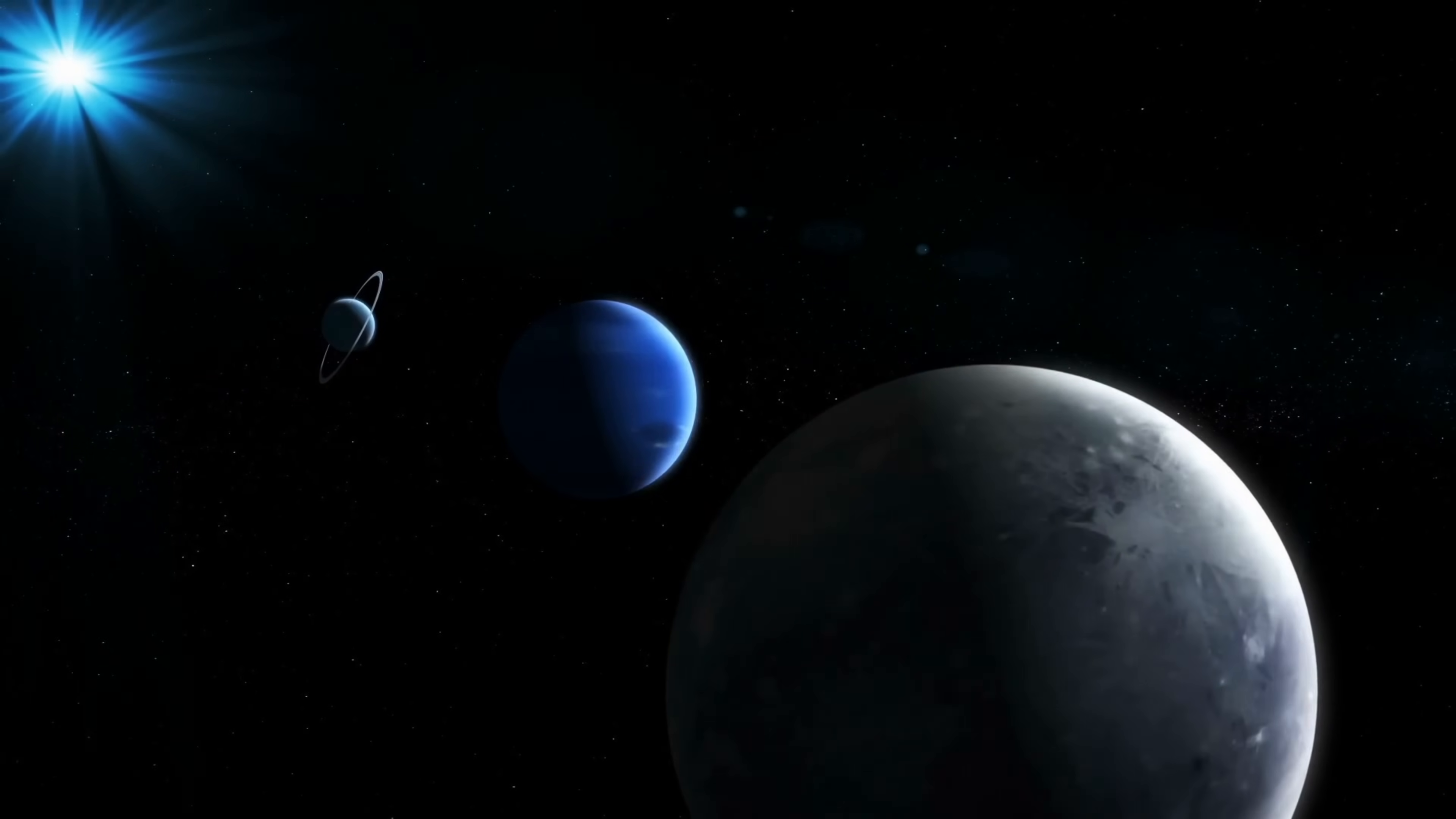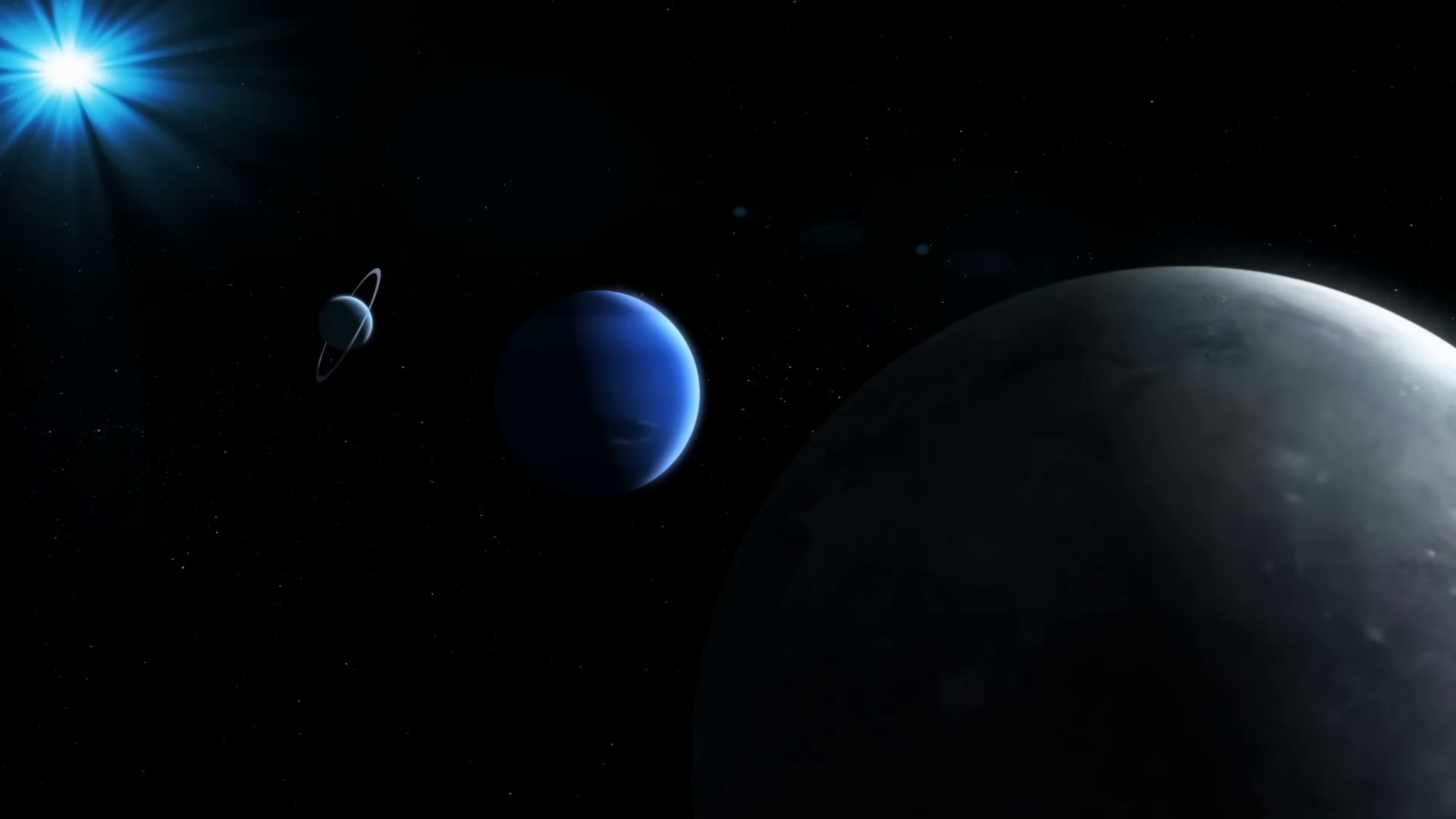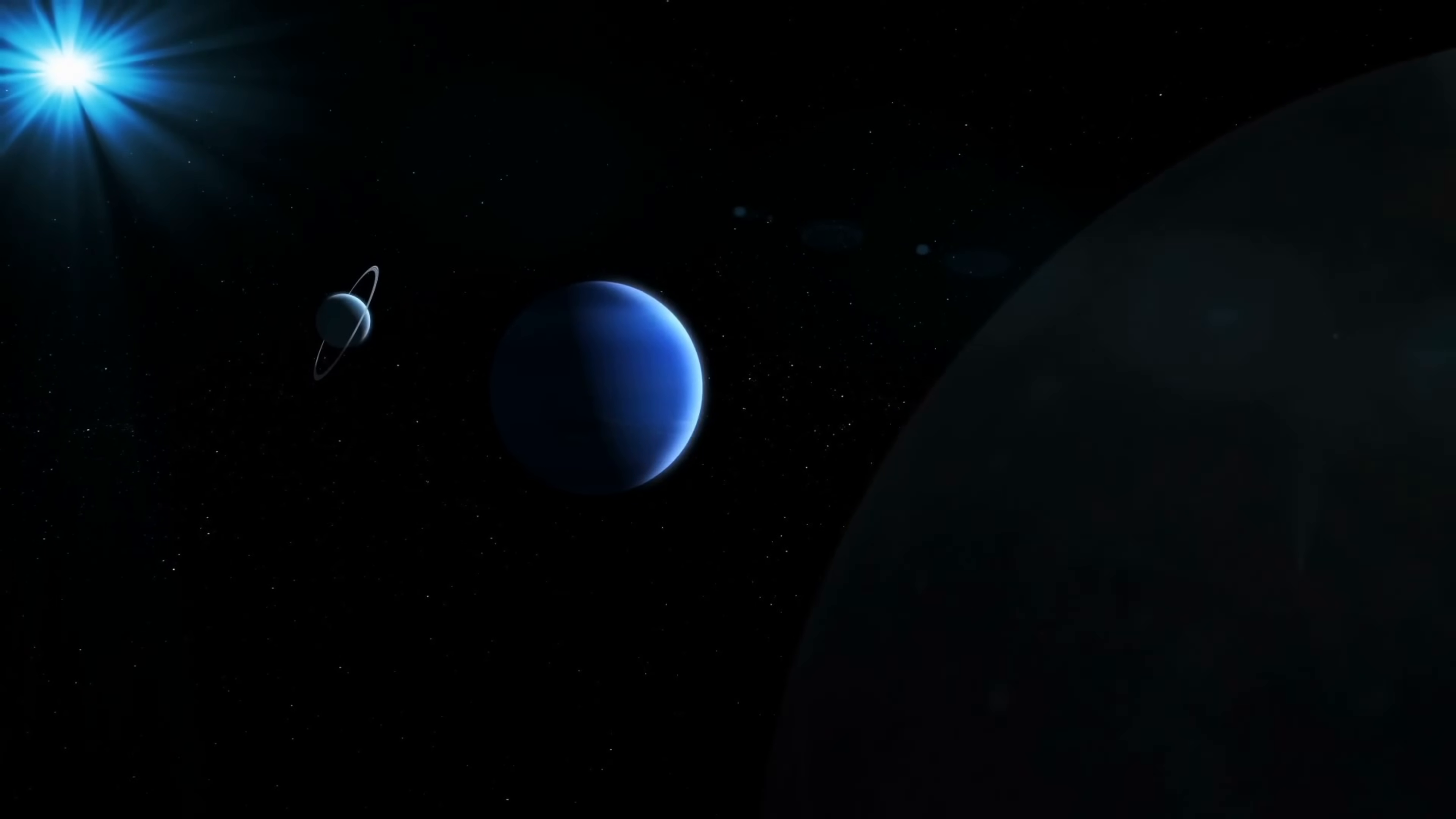Planets don't make their own light like stars do. When you look up and see a planet shining steadily in the night sky, it is shining because the planet is reflecting the sun's light, not because it's making its own. If the light you see appears twinkling, this is a star, not a planet.